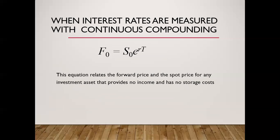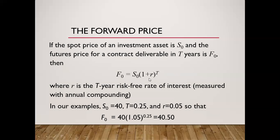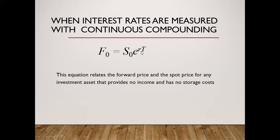We're going to normally use continuous compounding. If you take (1 + R/M) raised to the T times M, as M approaches infinity, it goes to E to the RT. That's why we like continuous compounding — it ends up being so much easier to calculate. Note that this equation — the forward and spot — applies to anything that has no income and no storage costs. We'll modify it slightly if it generates income or if we have to pay to store it, and that can be given as either a flat dollar amount or a percentage.